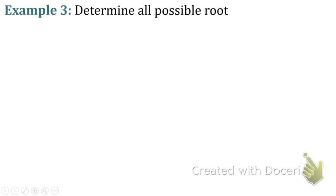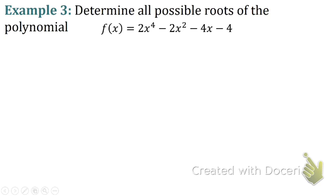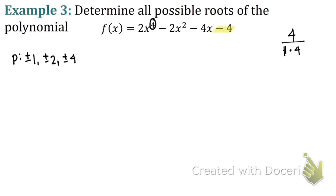Let's look at an example. We're going to determine all possible roots of the polynomial 2x to the fourth minus 2x squared minus 4x minus 4. We know we are going to have up to four roots. To find my p's, I have to find my constant, which is negative 4. I'm going to list all my factors of negative 4: plus or minus 1, plus or minus 2, plus or minus 4 — because 4 is 1 times 4, or 2 times 2. So those are my p's. To find my q's, I need my leading coefficient, which is 2, and the factors of 2 are 1 times 2, so plus or minus 1 and plus or minus 2.